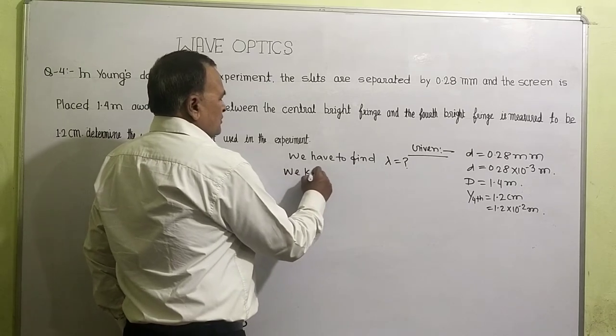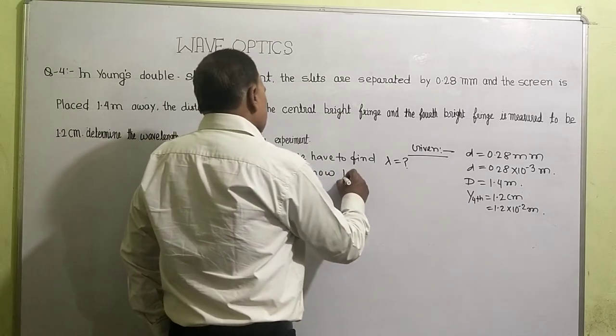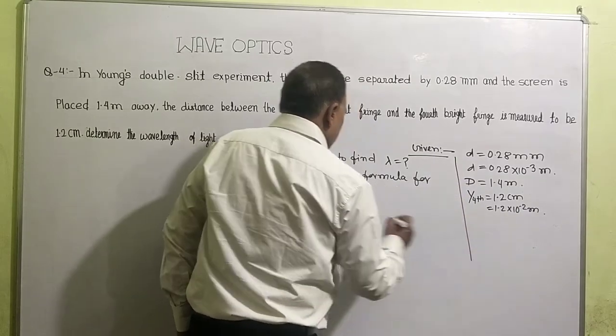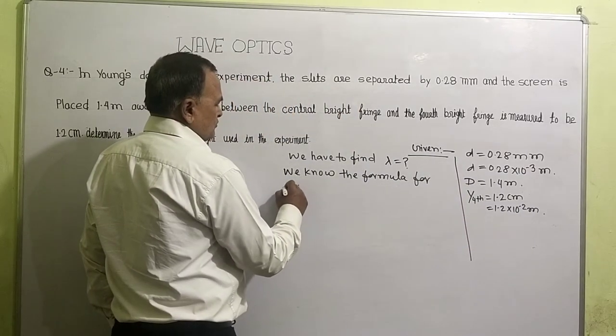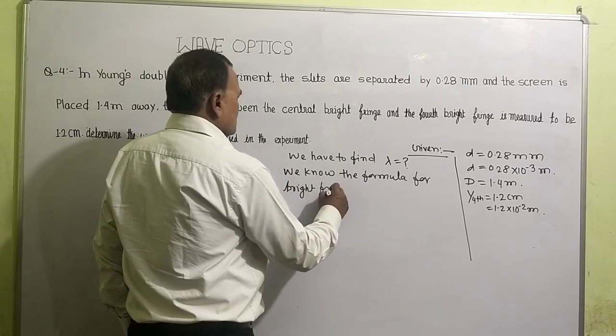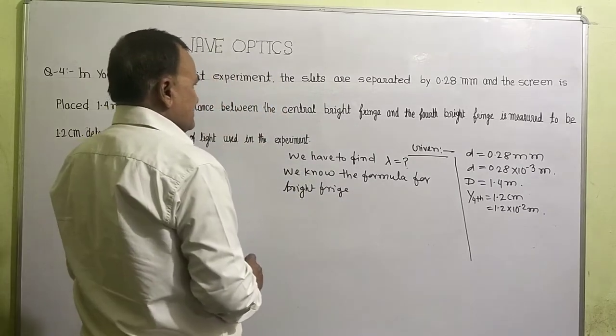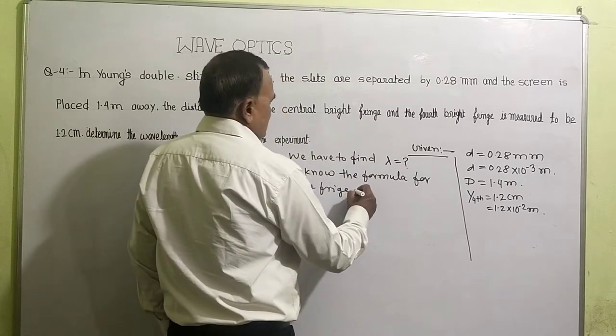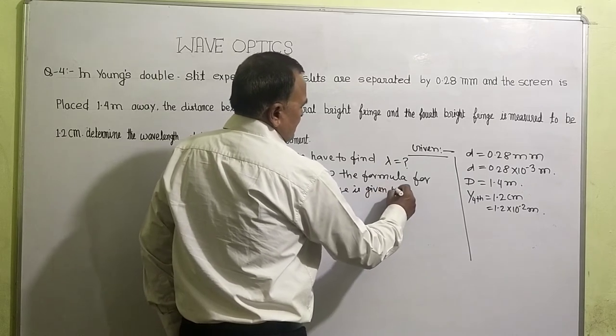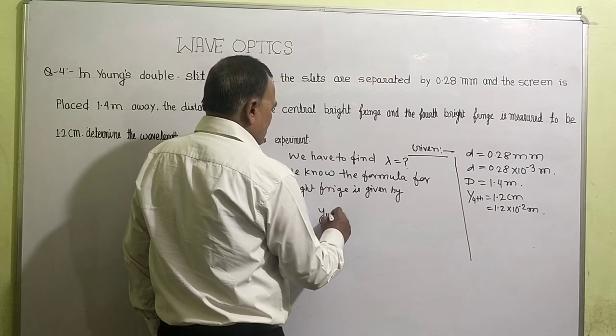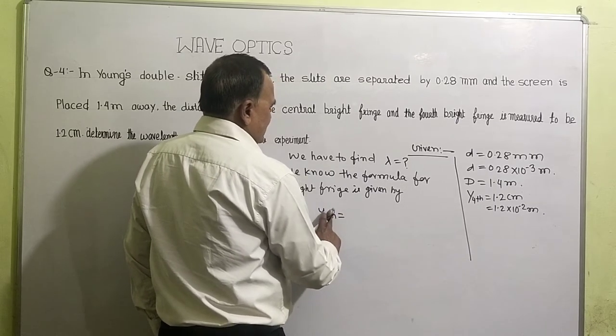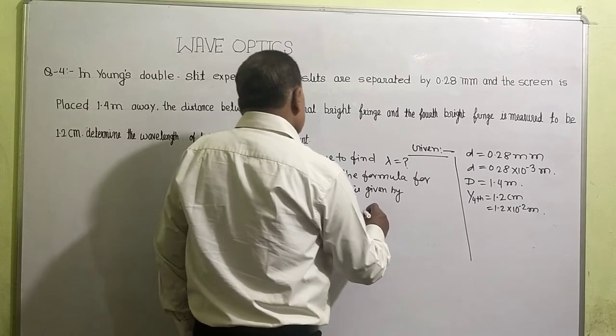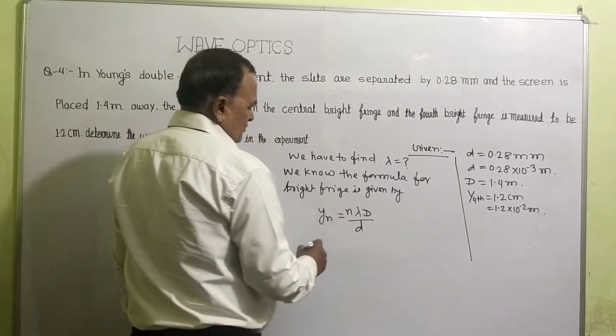And we know the formula, we know the formula for bright fringe. The formula for bright fringe is given by yn equals, that means yn equals n lambda D by d. This is the formula.